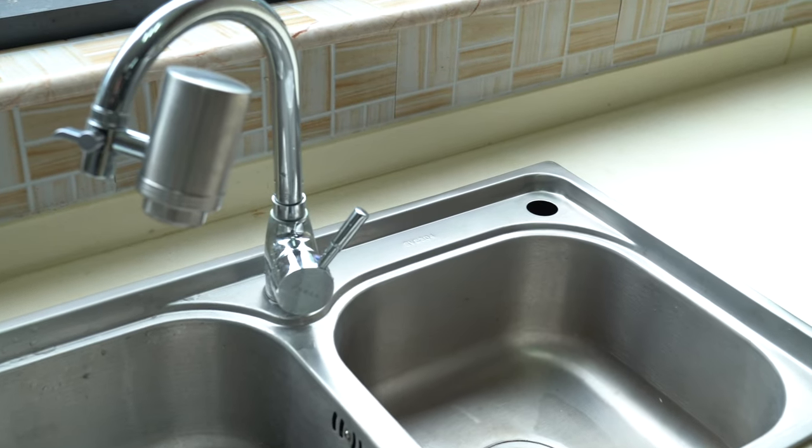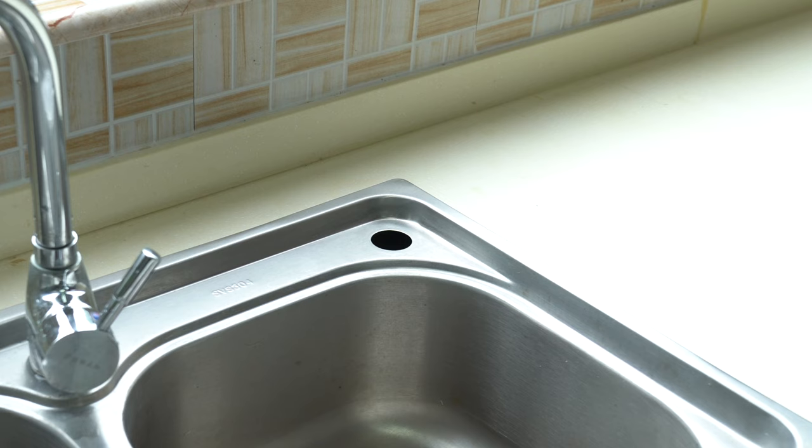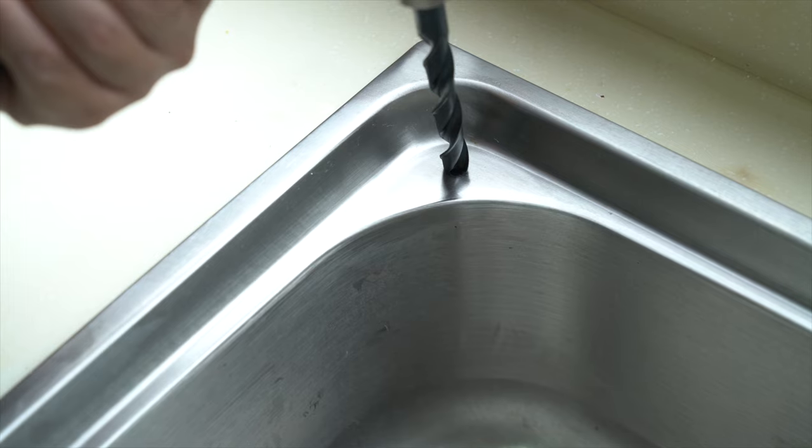RO Faucet. The stainless steel faucet requires a mounting hole around the sink. If there are additional mounting holes already available in your sink, remove the cover and use the hole to install the faucet. If there are no additional mounting holes available, use an electric drill with half-inch drill bit and create a new mounting hole.